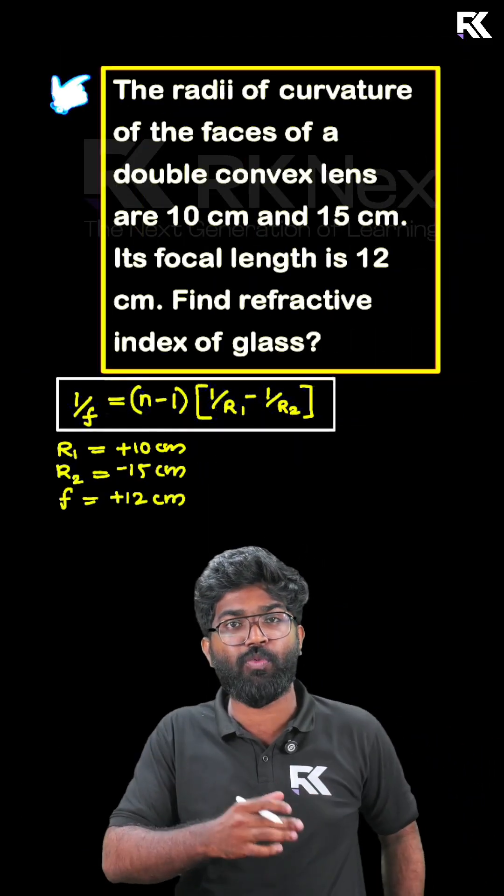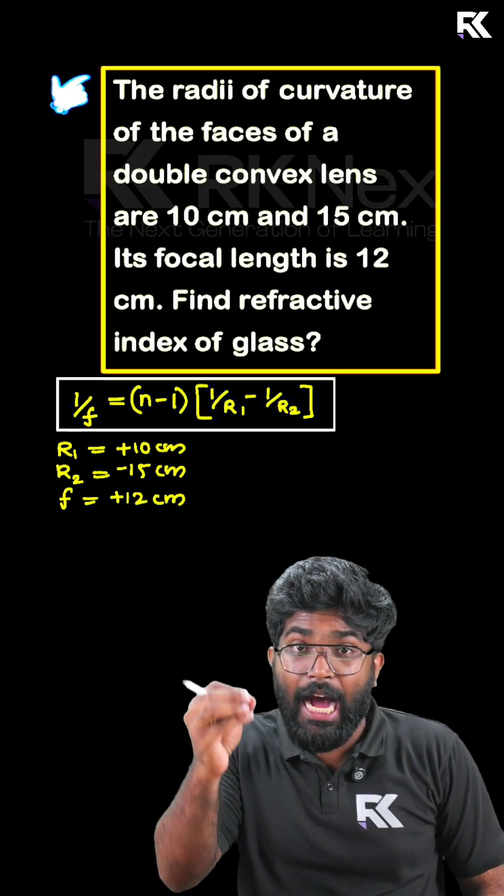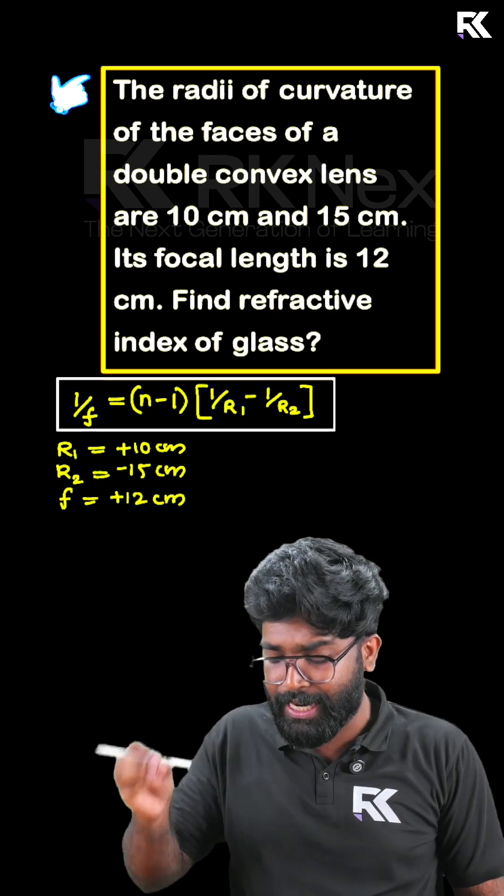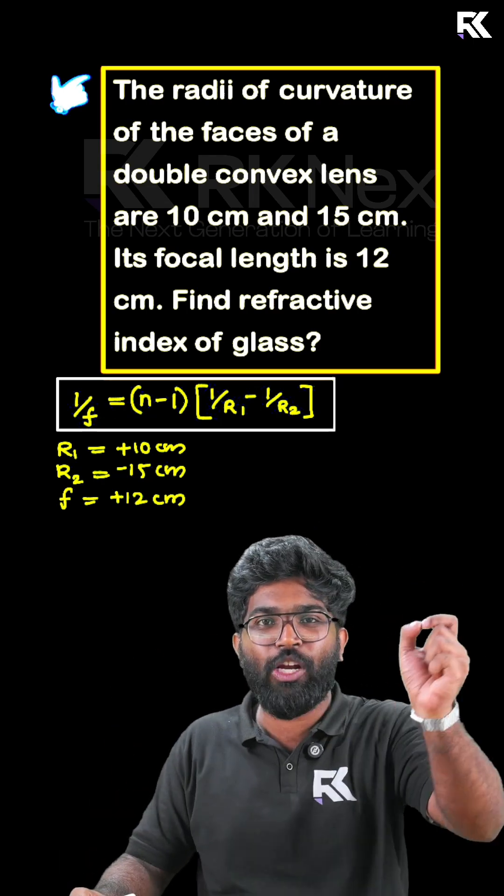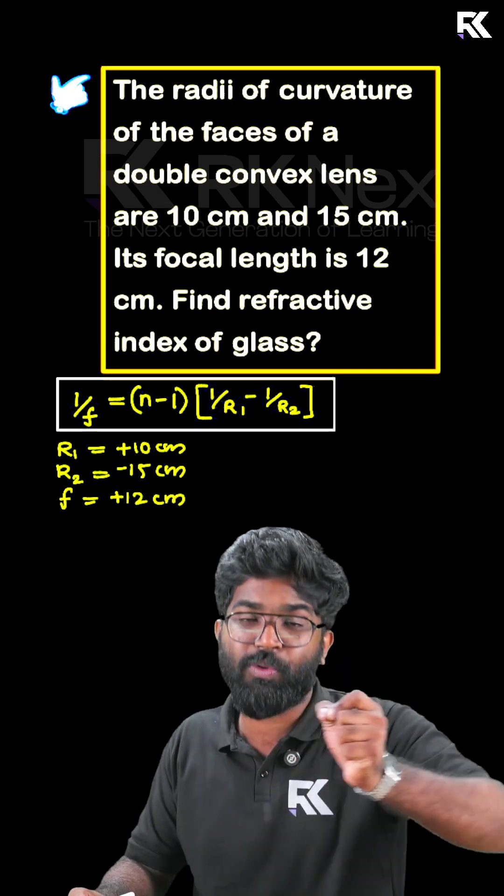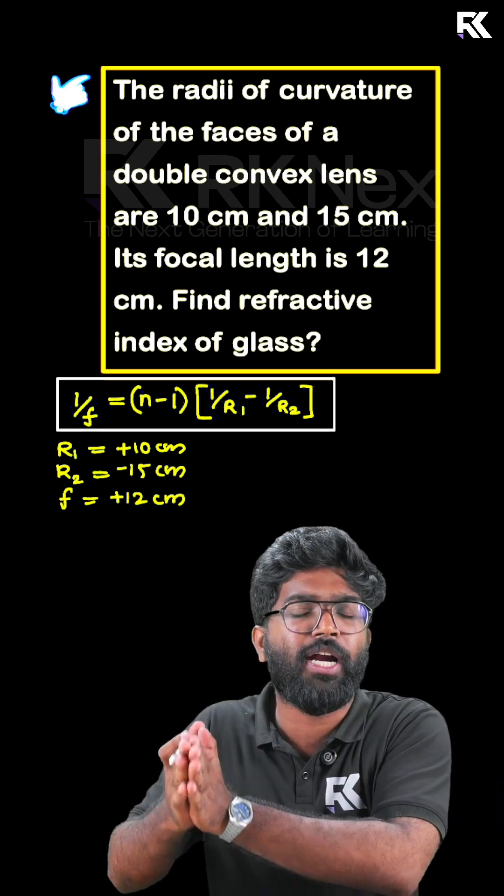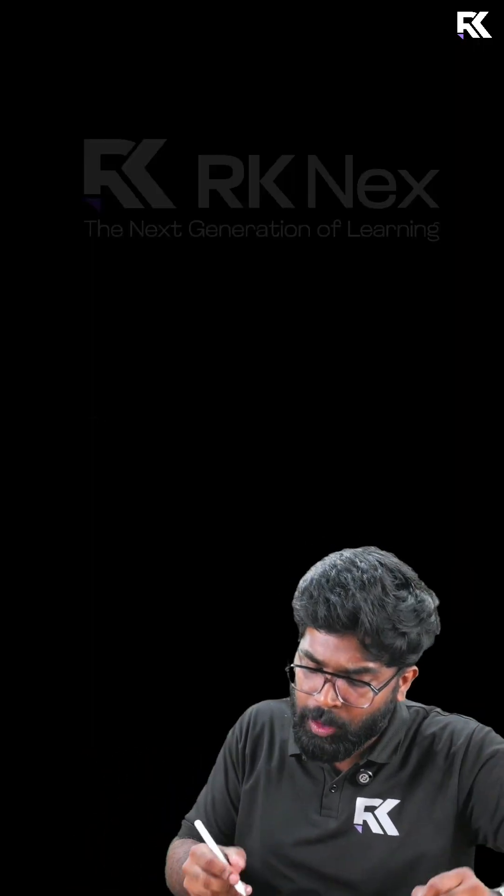Simple question is that the lensmaker's formula will be substituted. Here, the radius of curvature is positive, so plus 10 cm. R2 is the negative that is minus 15 cm. Focal length is positive, plus 12 cm. Direct equation will be substituted.